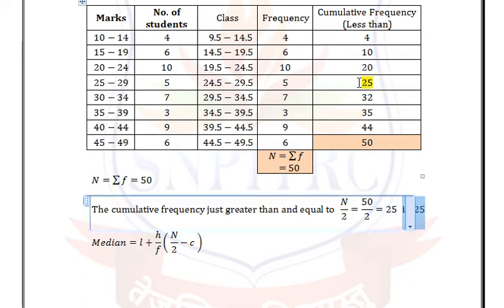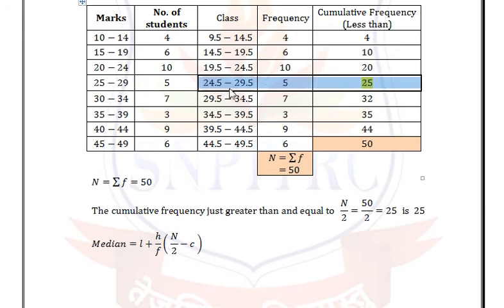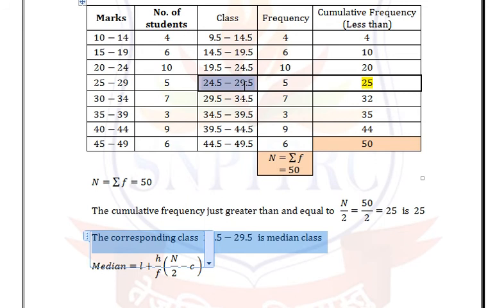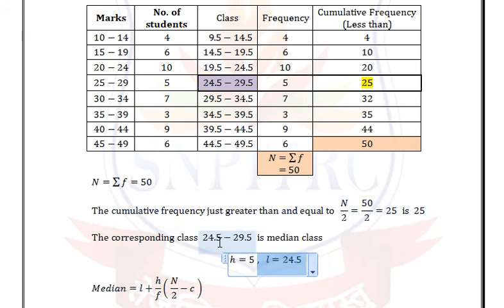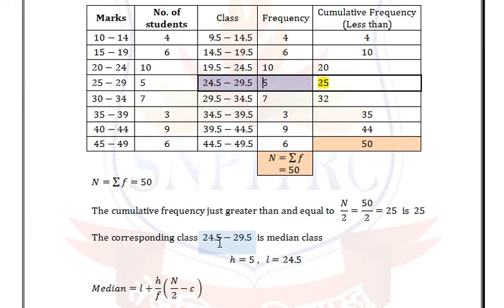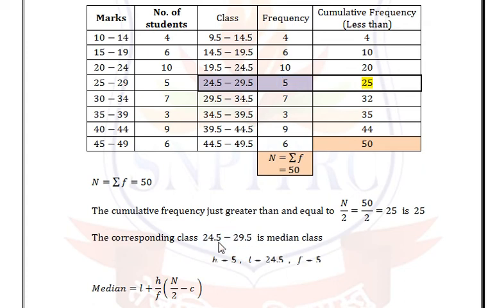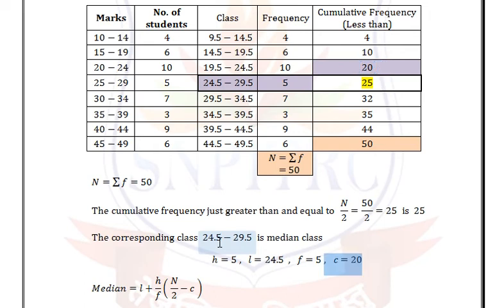The corresponding class is 24.5 to 29.5, which is the median class. H = 5, the lower limit L = 24.5, and the frequency of the median class F = 5. The cumulative frequency of the previous row C = 20.